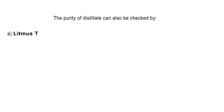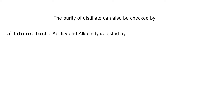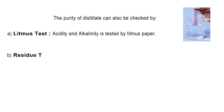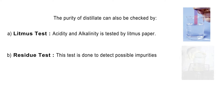The purity of distillate can also be checked by litmus test. Acidity and alkalinity is tested by litmus paper. Residue test: this test is done to detect possible impurities like soluble chlorides, carbonates and sulphate.